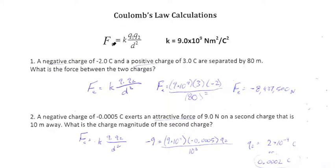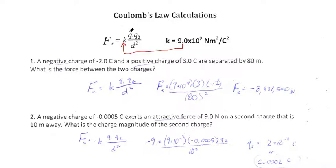Fe stands for electrostatic force. Remember this little e is essentially record keeping — it's not actually going to do anything for us other than conceptually tell us this is a force due to electrostatics. We'll never insert a number here or do any multiplication or anything like that. K is a constant, so that always stays the same by definition. Constant is constant — not changing.